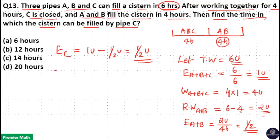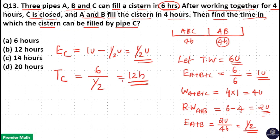Then the time taken for C to complete the 6 unit work is 6 divided by efficiency of C (1/2), which equals 12 hours. So option B is your answer.